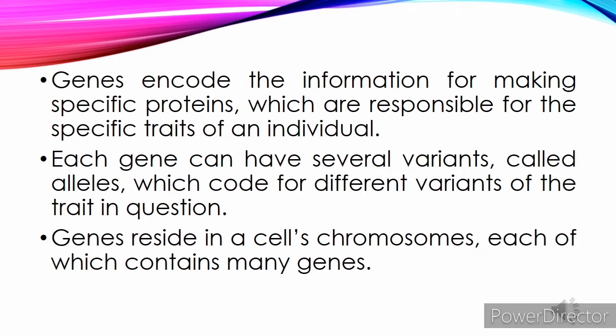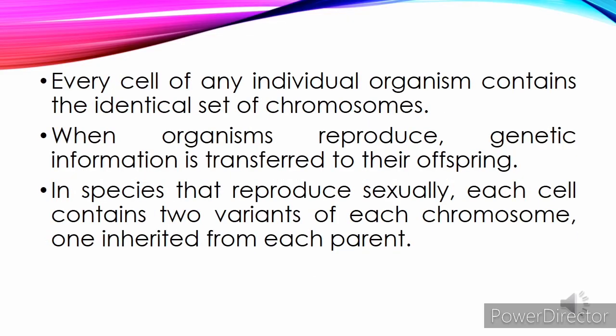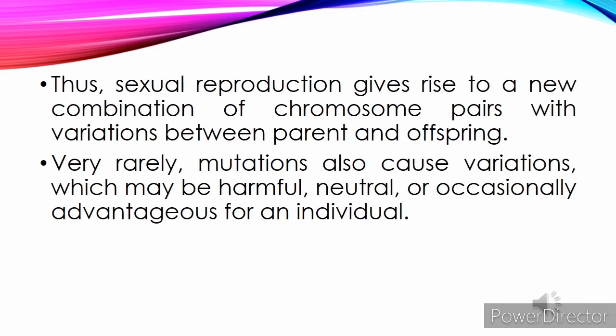Genes reside in a cell's chromosomes, each of which contains many genes. Every cell of any individual organism contains the identical set of chromosomes. When organisms reproduce, genetic information is transferred to their offspring. In species that reproduce sexually, each cell contains two variants of each chromosome, one inherited from each parent. Thus, sexual reproduction gives rise to a new combination of chromosome pairs with variation between parent and offspring.